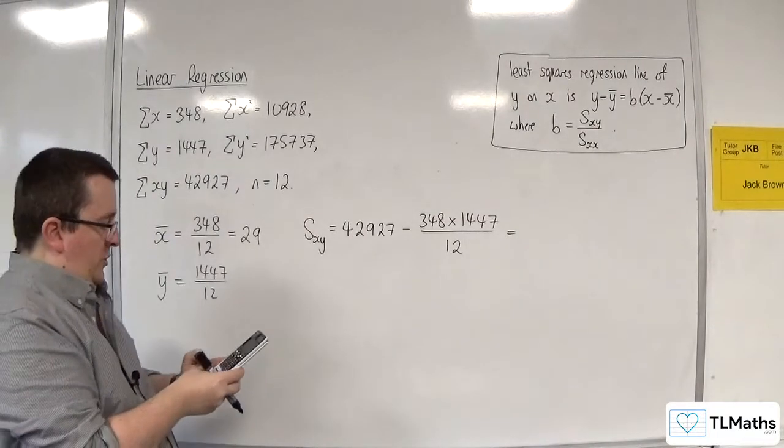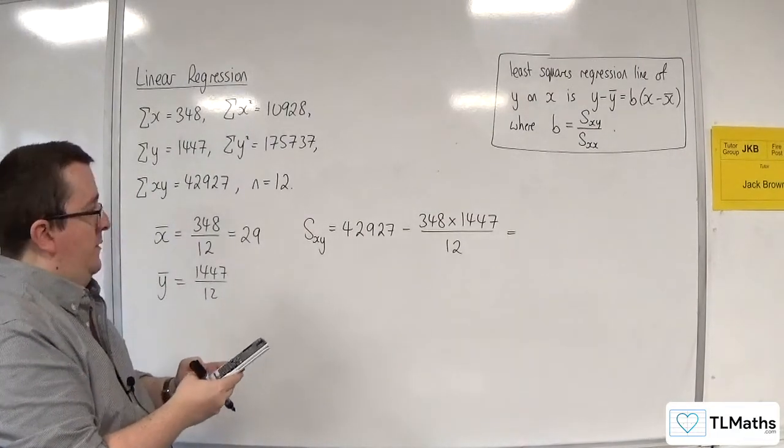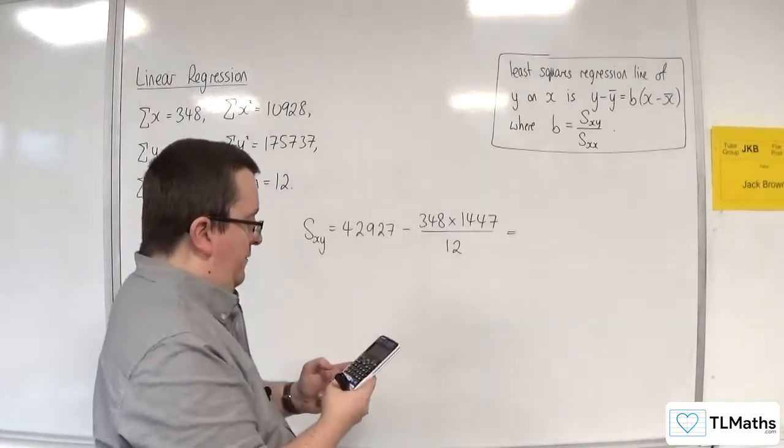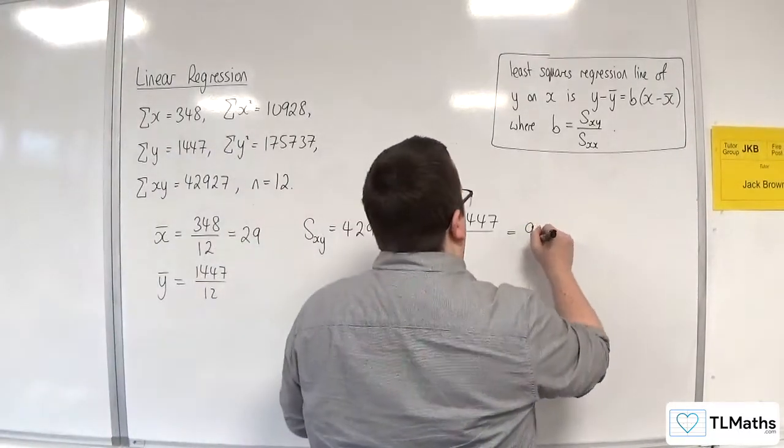So 42927 take away 348 times 1447 divided by 12. And that's going to be 964.